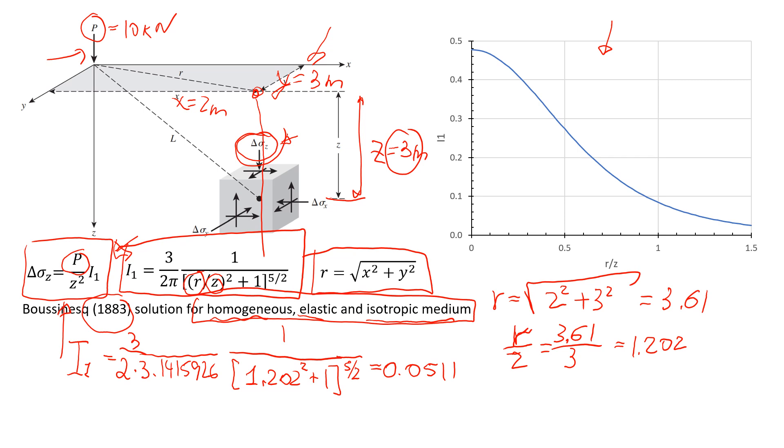And now we can estimate that change in the vertical stress, so delta sigma z, it's equal p, which is 10 kilonewtons divided by the depth of the soil element, which is 3 meters in the power of 2, and then times this i component, which is 0.0511. And that will give us answer of approximately 0.0715 kilonewton per square meters.